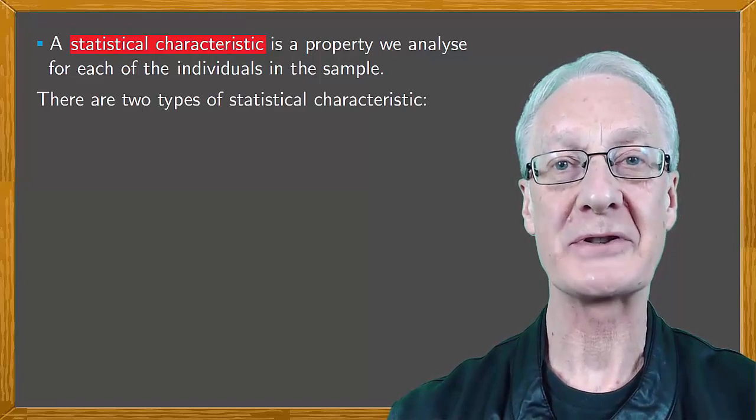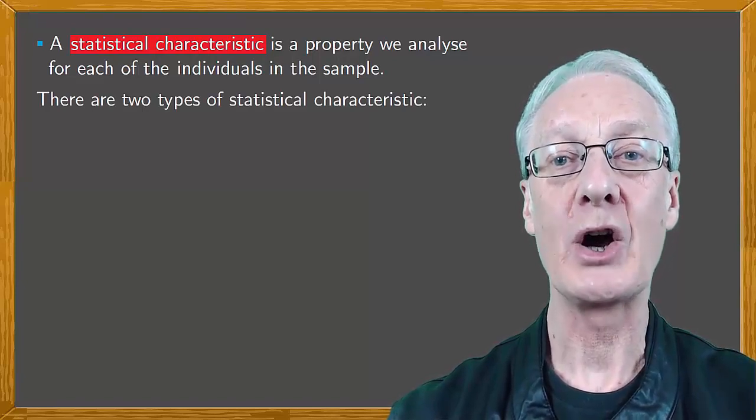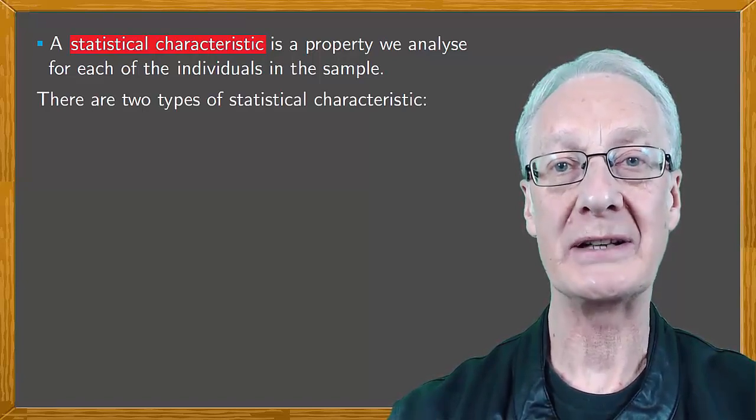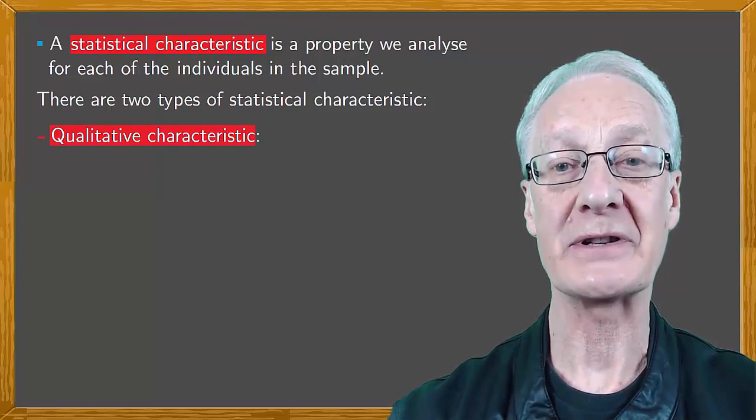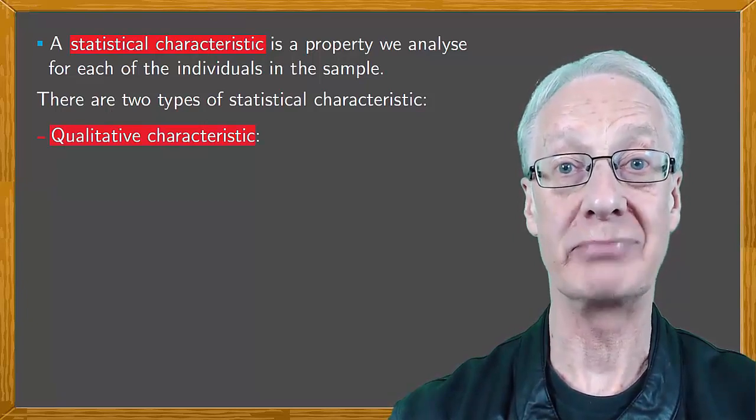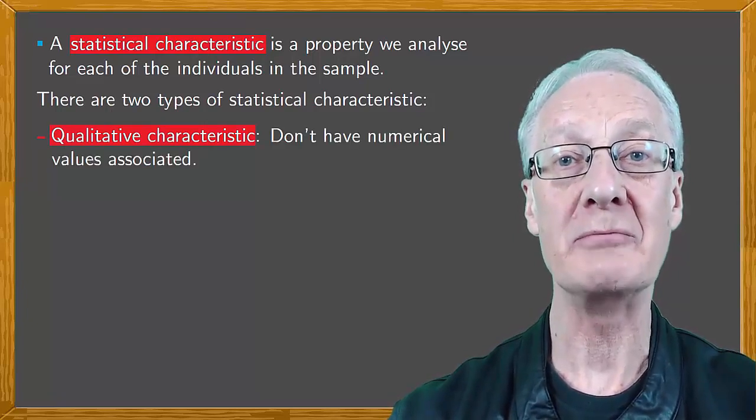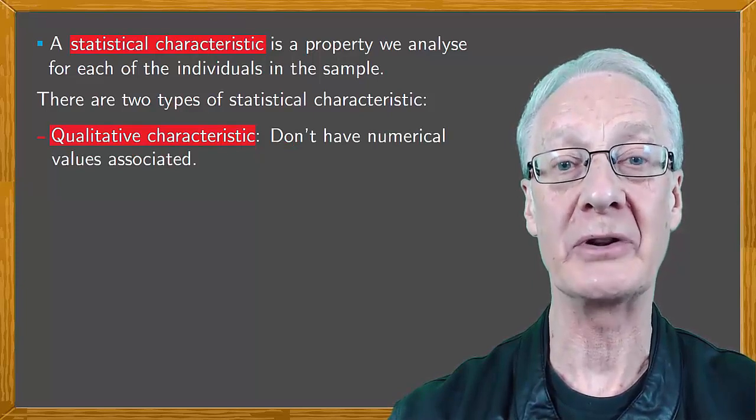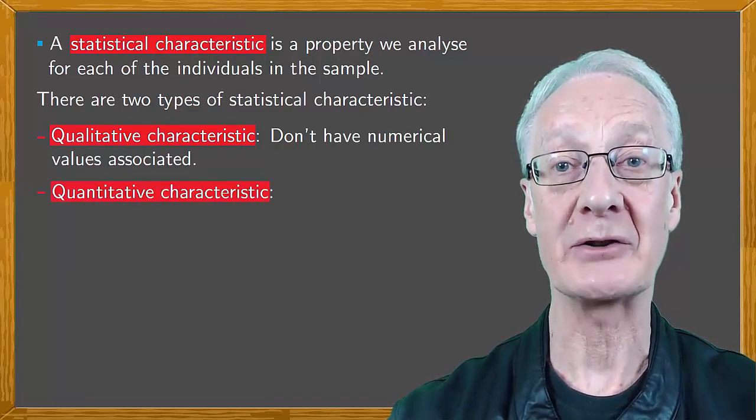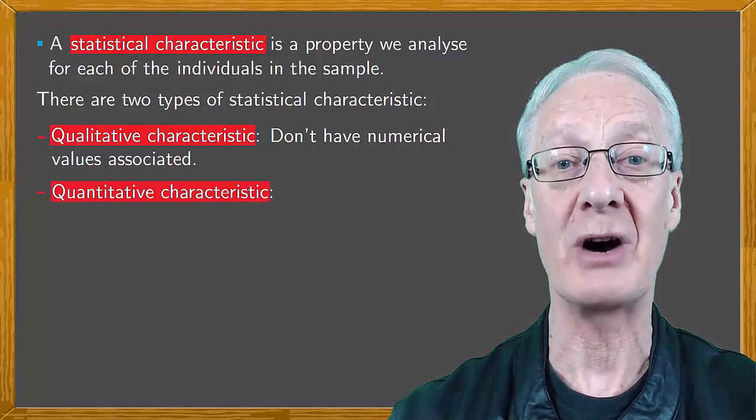There are two types of statistical characteristic, qualitative and quantitative. Qualitative characteristics such as hair color or nationality don't have numerical values associated with them, whereas quantitative characteristics such as age or height do.